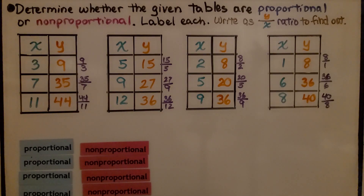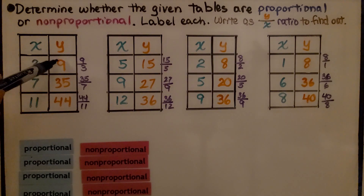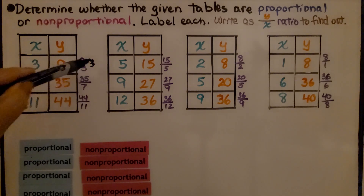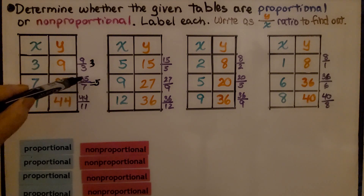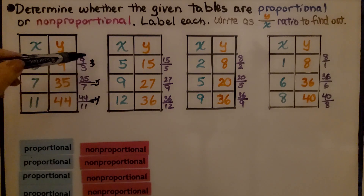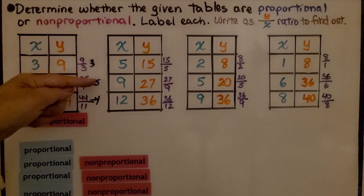We've got our proportional and non-proportional labels. It's telling us to determine whether the given tables are proportional or non-proportional and label each. We can write the Y to X ratio to find out. Here we have 9 for Y and 3 for X — that's 9 thirds, which equals 3. We have 35 sevenths, which equals 5. And 44 elevenths, which equals 4. We have a 3, a 5, and then a 4. That is non-proportional because we don't have a constant rate of change — it went from 3 to 5 to 4.